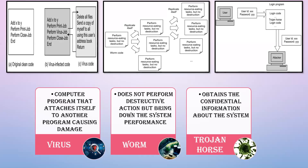In the last video, we have seen different types of attacks happening in the network. In this video, we will be deeply looking at the programs that are attacking the network. It is divided into three types: virus, worm, and Trojan horse.